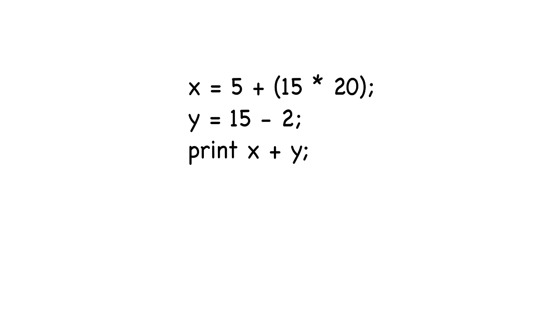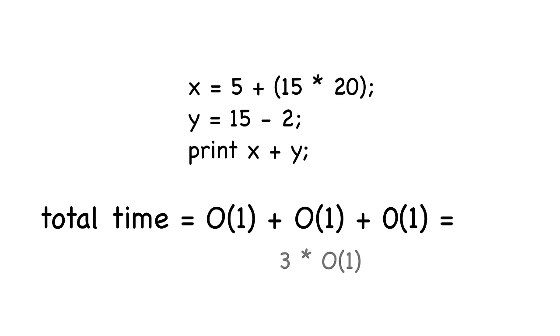What happens when we have a sequence of statements? Notice that all these are constant time. How do we compute Big O for this block of code? We simply add each of their times and we get 3 multiplied by Big O(1). But remember we dropped constants so it's still Big O(1).